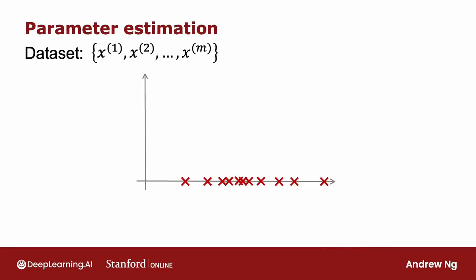When you're applying this to anomaly detection, here's what you have to do. You're given a data set of m examples, and here x is just a number. Here I'll plot the training set with 11 examples. What we have to do is try to estimate what are good choices for the mean parameter mu, as well as for the variance parameter sigma squared.